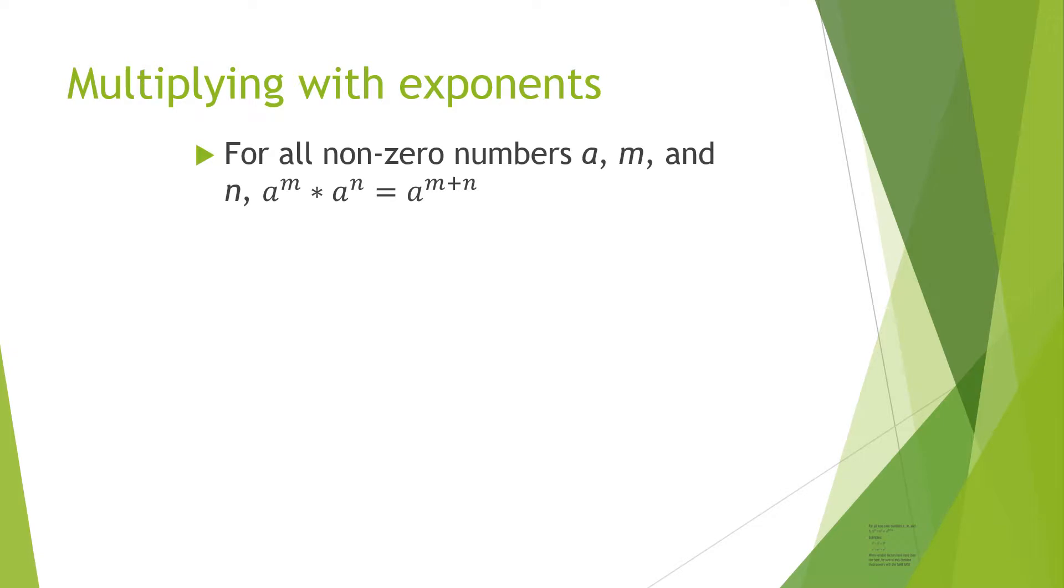The multiplying with exponents rule is quite simple. For all non-zero numbers a, m, and n, a to the power of m times a to the power of n is equal to a to the m plus n power.